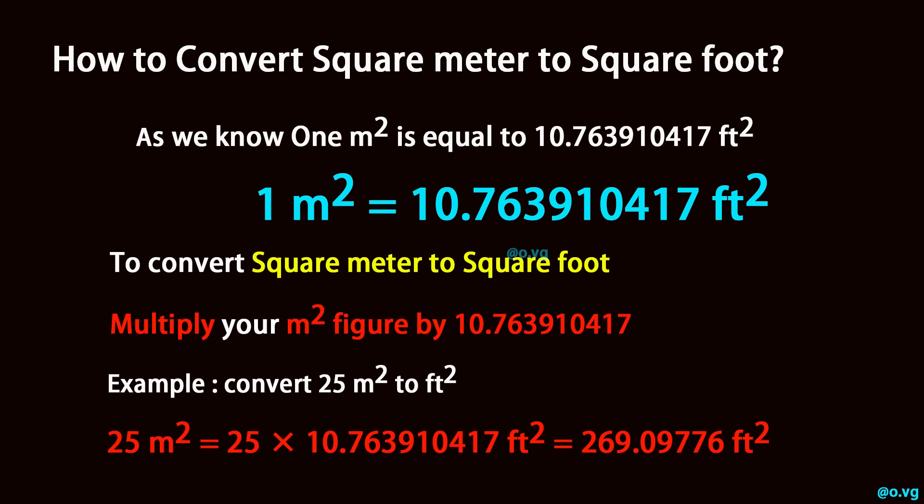To convert square meter to square foot, multiply your square meter figure by 10.763910417.